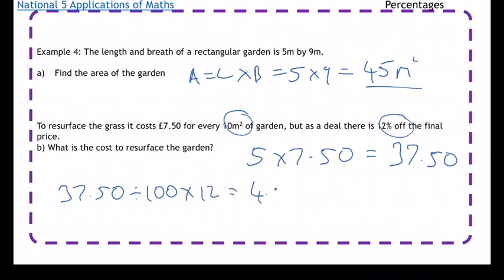So to work out how much it's going to cost, you do £37.50 take away £4.50, which is £33.